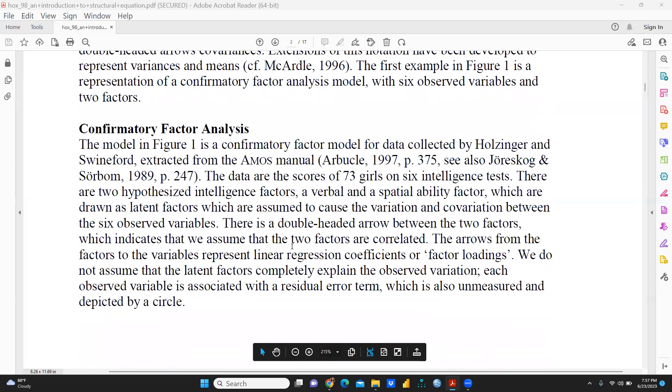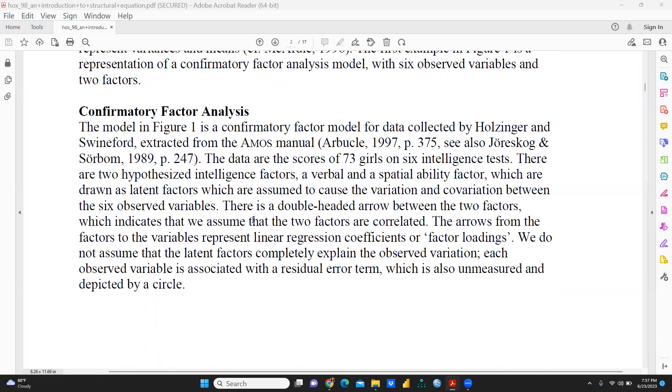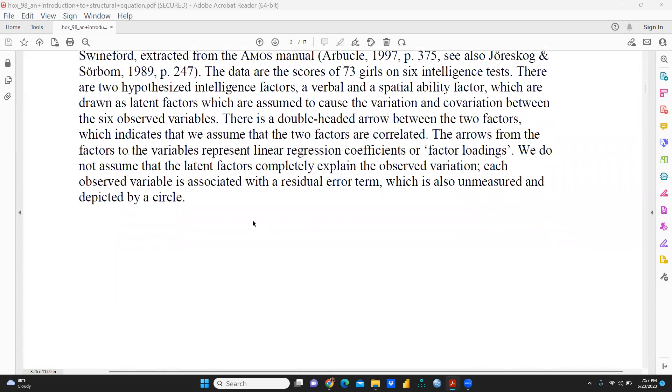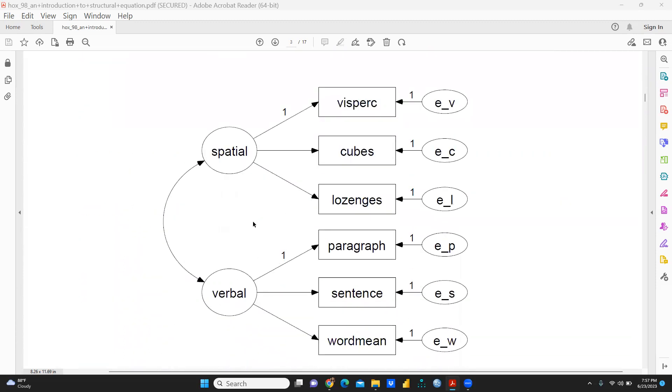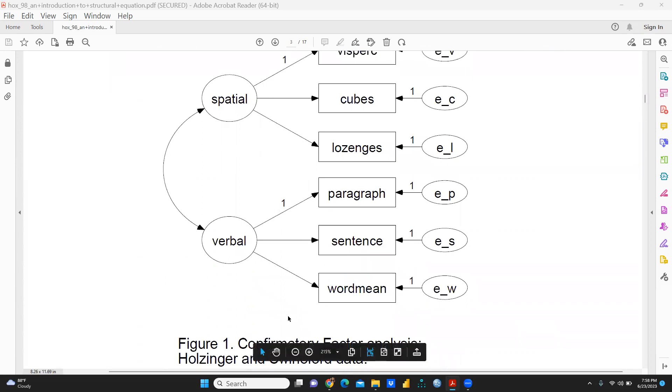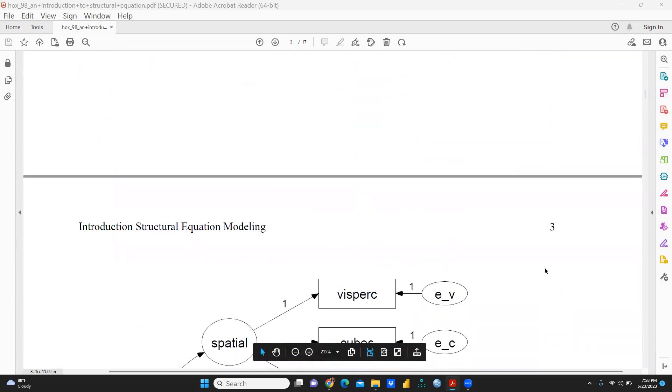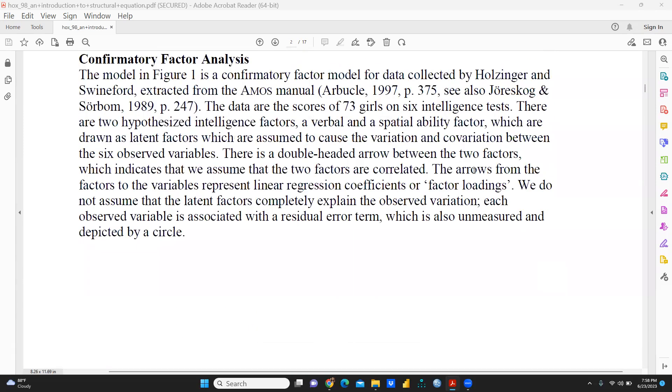Then, what do you mean by confirmatory factor analysis, which we can call CFA? In this figure, CFA is already mentioned. This figure shows CFA for data collected by Holzinger and Swineford, extracted from the AMOS manual. The arrows reflect factor loadings. So this is the confirmatory factor analysis. Everything is mentioned here in this particular figure.